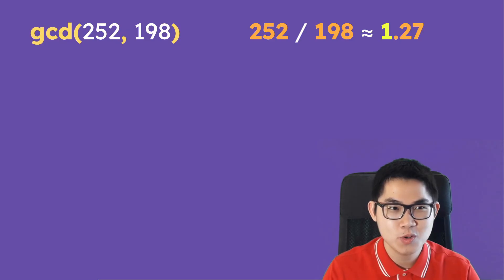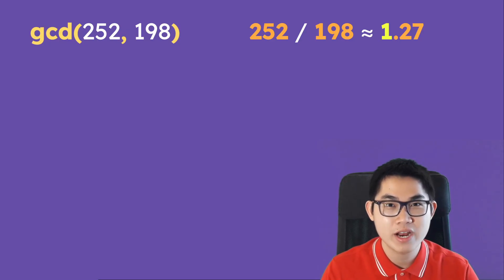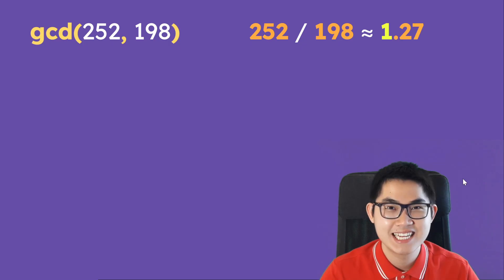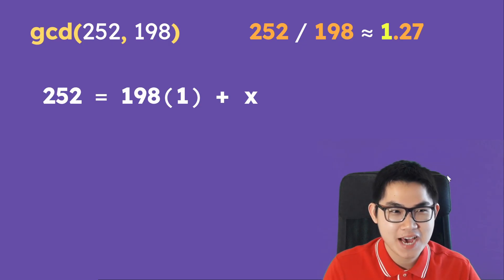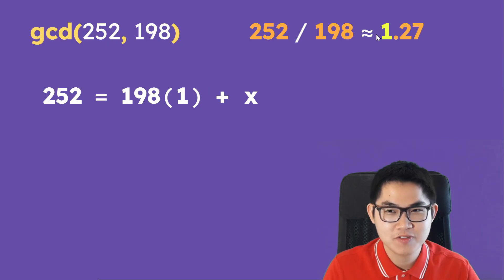The first step is take the larger number and divide it by the smaller number. So 252 divided by 198 gives us approximately 1.27. The second step is write it as an equation. We have 252 is equal to 198 times 1, and this one comes from this part here, and then plus X, where X is the remainder.